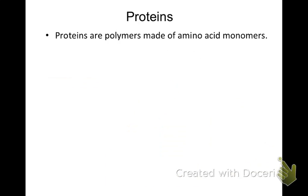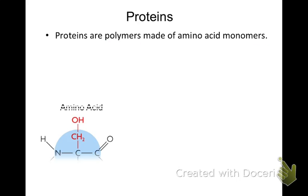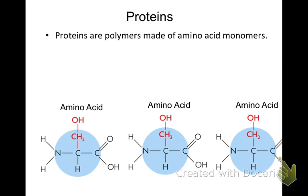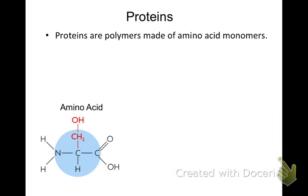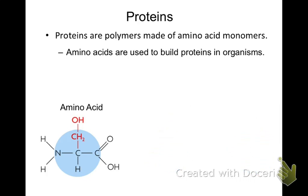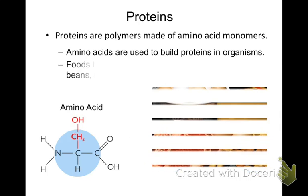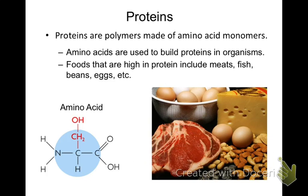Proteins are polymers made of amino acid monomers — remember, 'poly' is more than one and 'mono' is just one. Here's one amino acid monomer, and when you put a whole bunch of them together you get a protein, which is the polymer. Amino acids are used to build proteins in organisms. Foods high in protein include meats, fish, beans, and eggs.